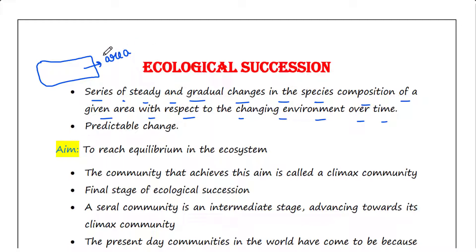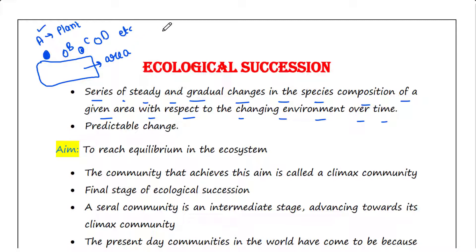Suppose we have an area here. First, the species that comes here is species A — A could be a plant. At first, only species A dominates the land, then gradually the environment becomes more favorable and species B, C, D, etc. come — they could be other plants, animals, or microbes. So we can see the species composition has changed: first we had only species A, now we have species variation like B, C, D, etc.